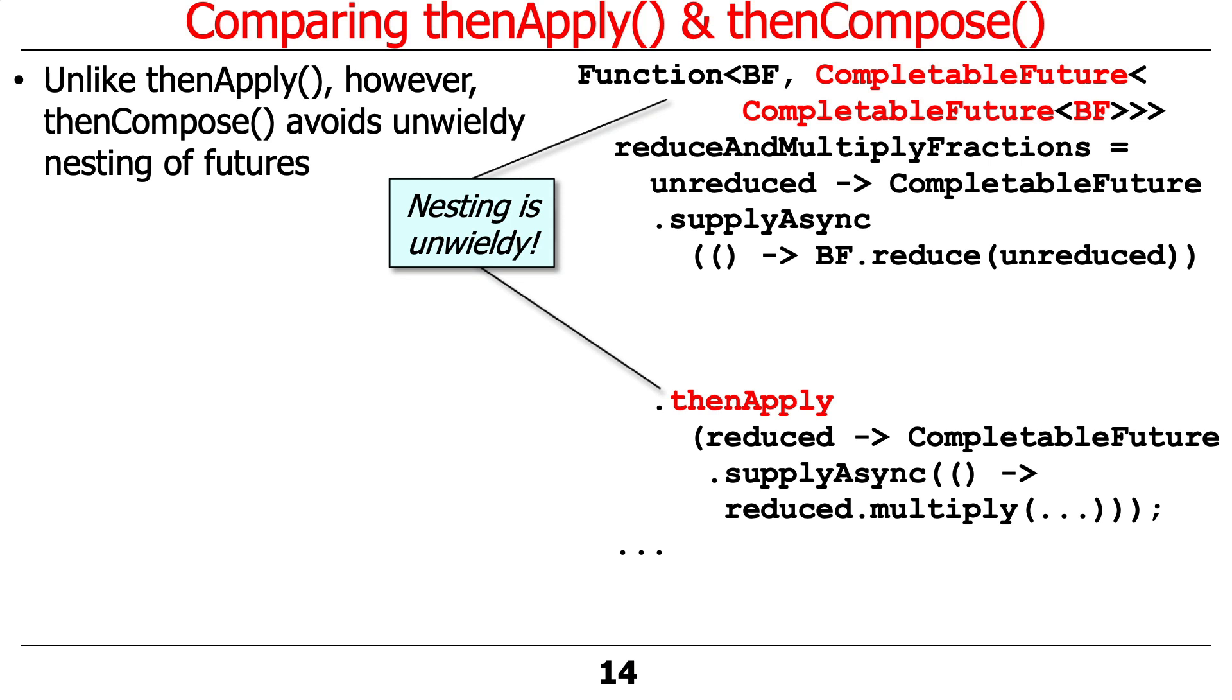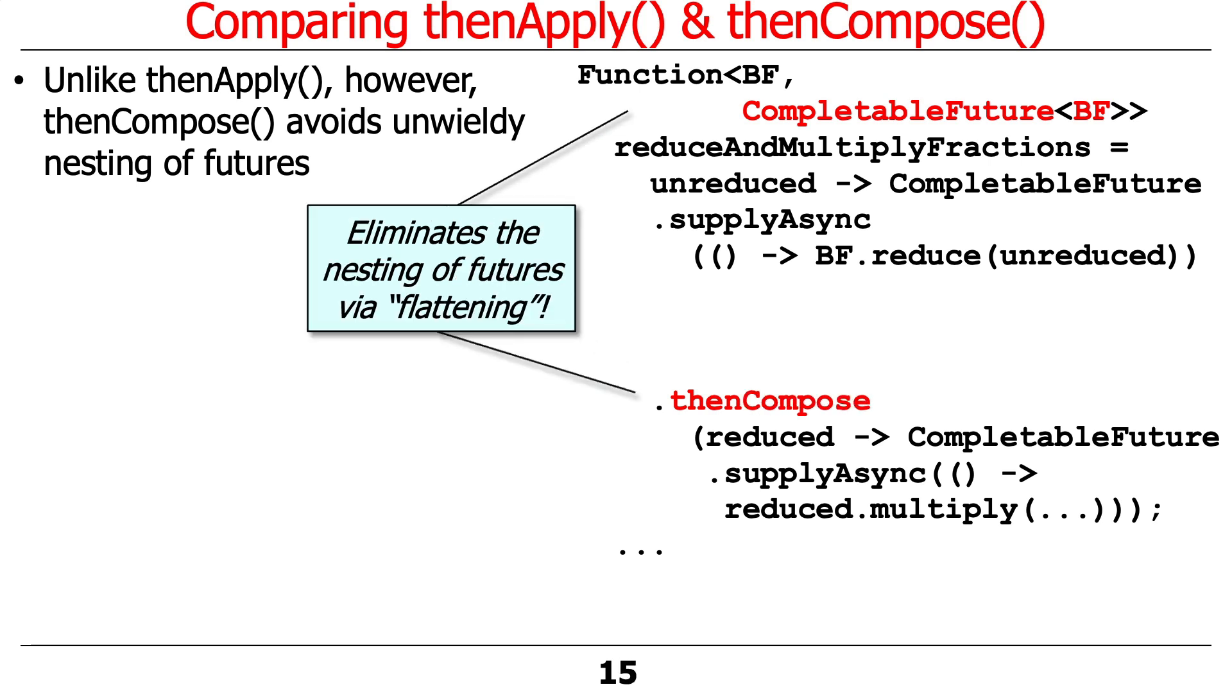That actually works, believe it or not, but who wants to look at ugly code like that? Ugh, terrible. So a much better way to do it is to use thenCompose, and as you can see, thenCompose will denest or flatten the results so we don't have a CompletableFuture to a CompletableFuture, we just have a CompletableFuture. So that's what thenCompose does. Very nice way to do things.